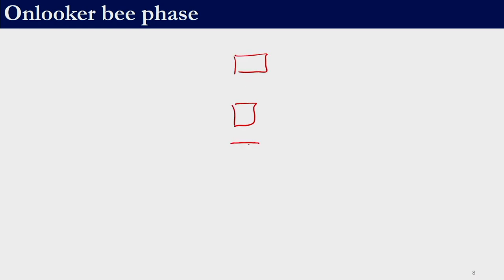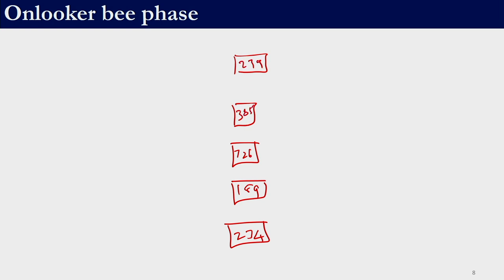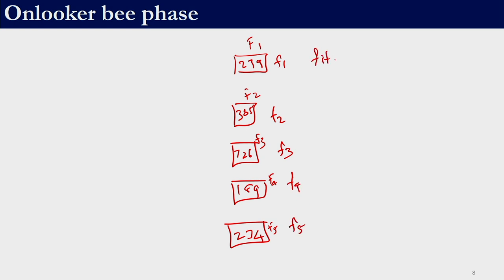The food sources in the employed bee phase and onlooker bee phase may or may not be the same, as you will realize through the example. For each food source we have an objective function value F1 to F5 and a corresponding fitness value (fitness 1 through fitness 5). In the onlooker bee phase there are also onlooker bees O1 to O5. Remember: in employed bee phase every bee exploited a food source, but in onlooker bee phase that is not necessarily the case.